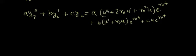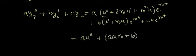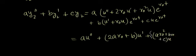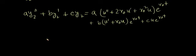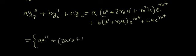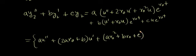After gathering terms, we get: [a·u'' + (2a·r0 + b)·u' + (a·r0² + b·r0 + c)·u]·e^(r0·t) = 0. Now, using the auxiliary equation a·r0² + b·r0 + c = 0, that last bracket vanishes. Also, since b² - 4ac = 0 implies r0 = -b/(2a), we get 2a·r0 + b = 0, so the u' term also vanishes.